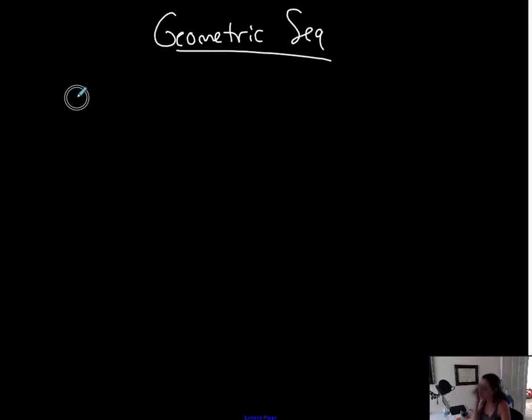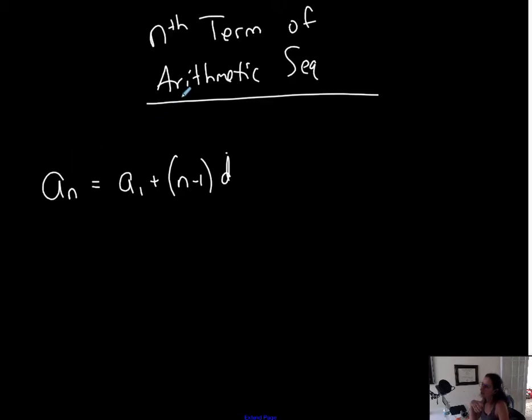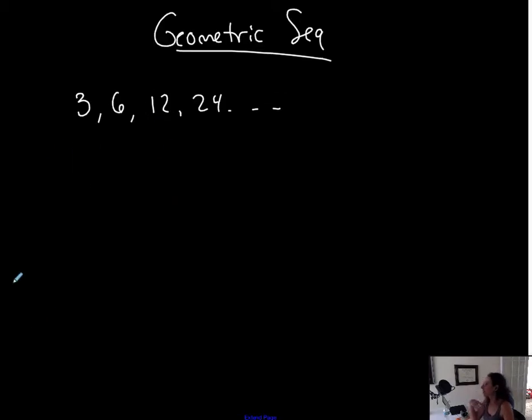So geometric sequence is another pattern that you can see that happens. Let me do this one first: 3, 6, 12, 24, and so on. So I have this pattern, or I have this sequence, and I want to represent a formula for this, but I also want to recognize the pattern. If there is one, then maybe I could use one of these formulas. Like, is it arithmetic? I could use that one. If it's geometric, I have another formula.